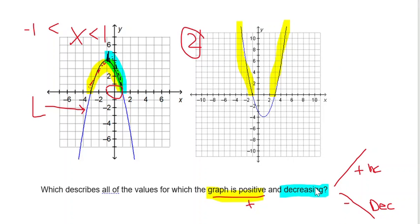Does the left-hand side or the right-hand side of this parabola represent the decreasing side? Since the parabola opens up, the left-hand side is decreasing. If the parabola opened down, the right-hand side would be decreasing. So we know that the left-hand side here, as we move from left to right, is going down.